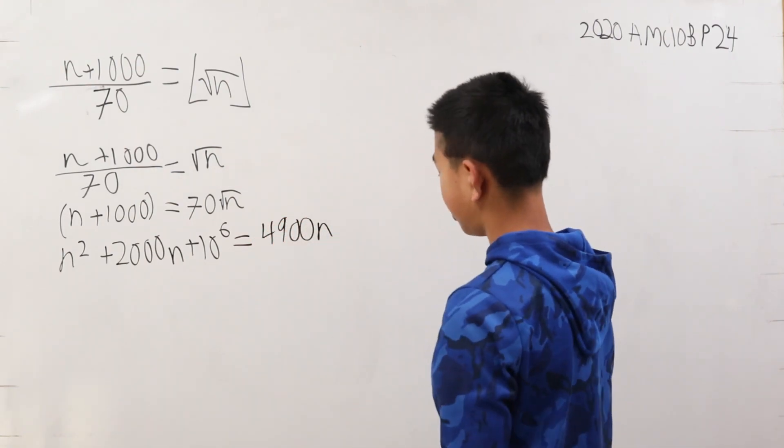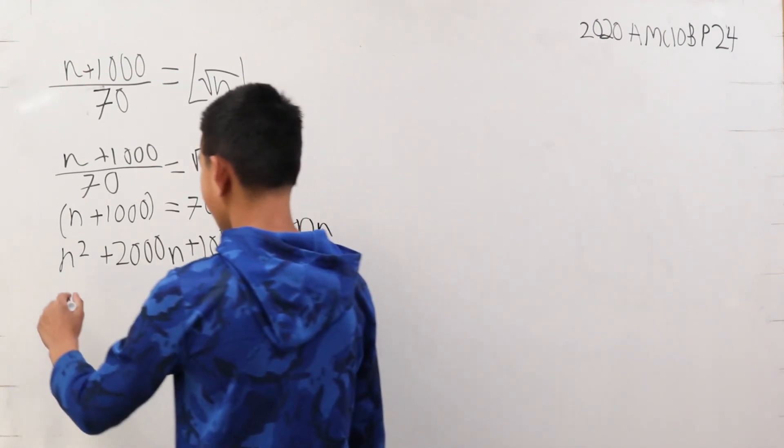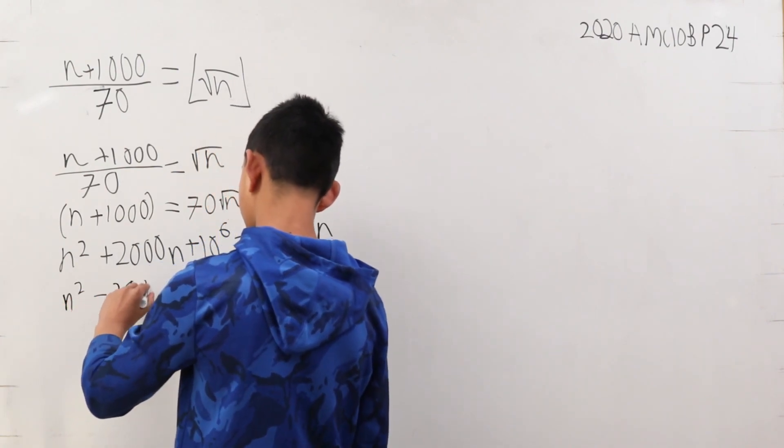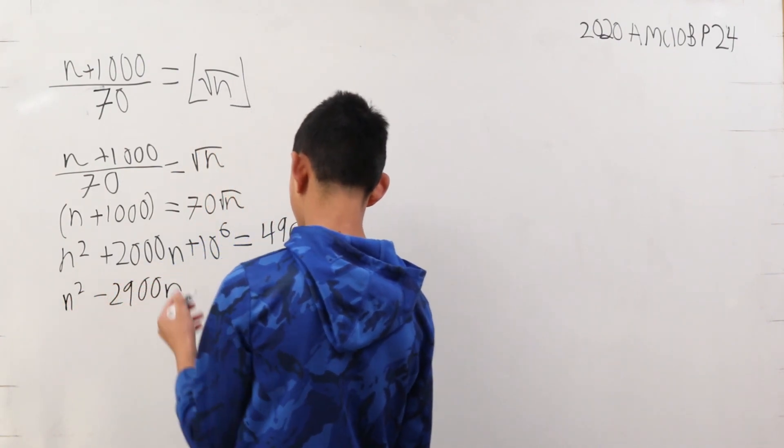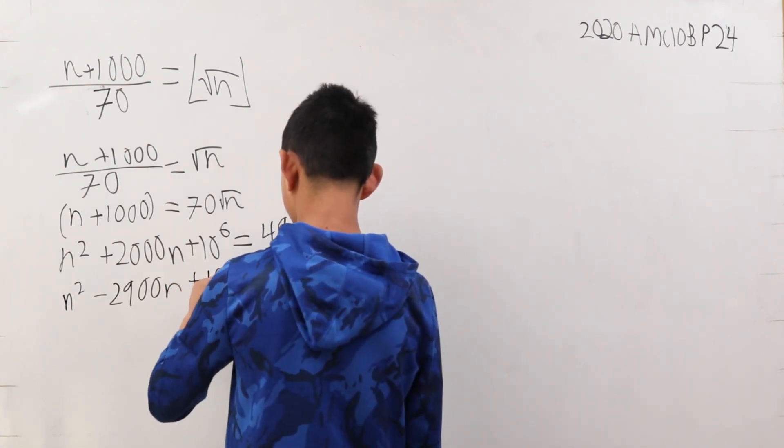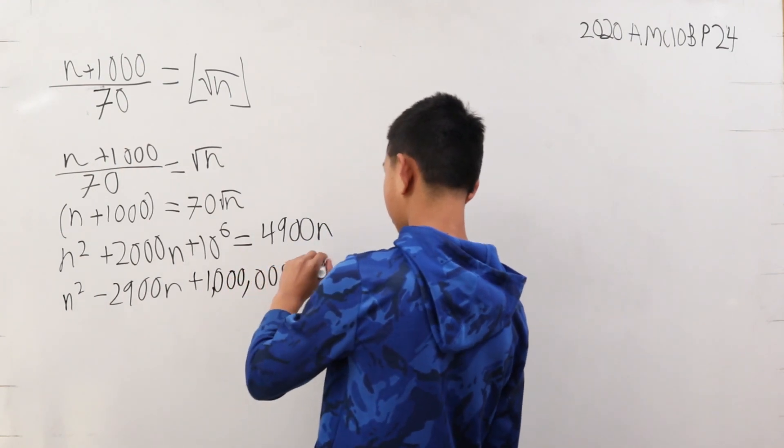Now we want to get a 0 on one side and all the terms on the other side, because this looks like a quadratic. We get n squared minus 2,900 n plus 1,000,000 is equal to 0.